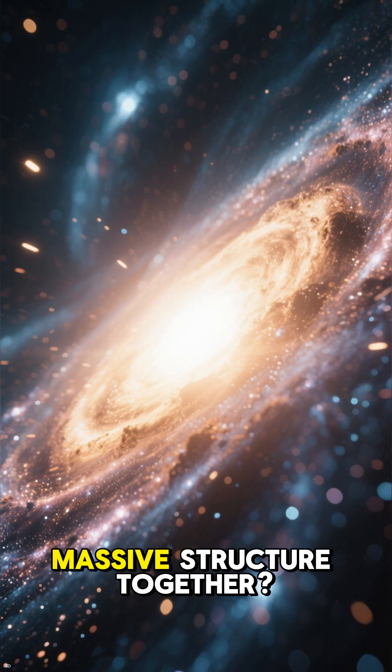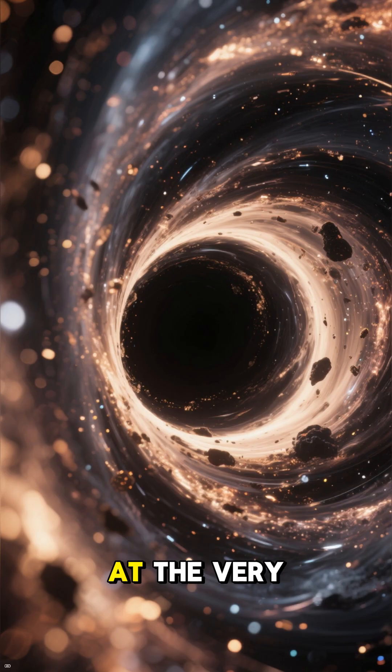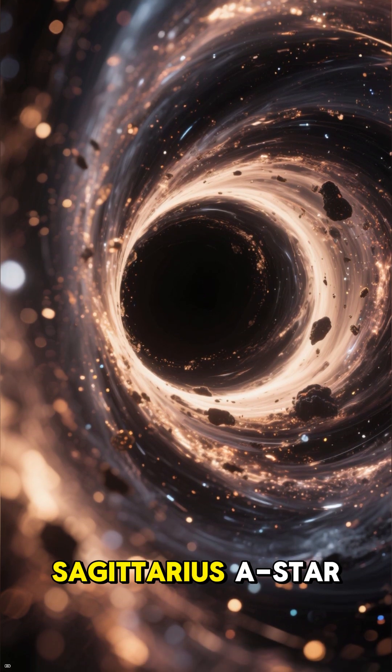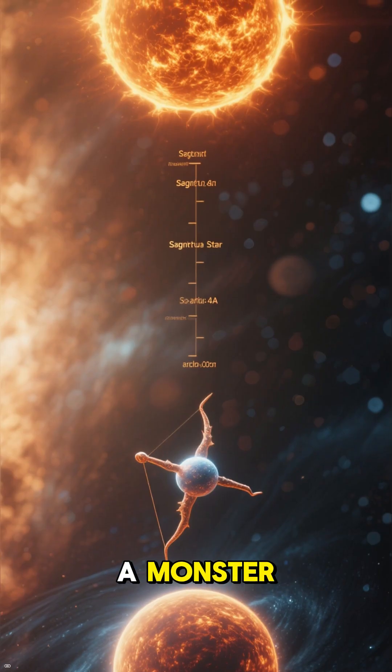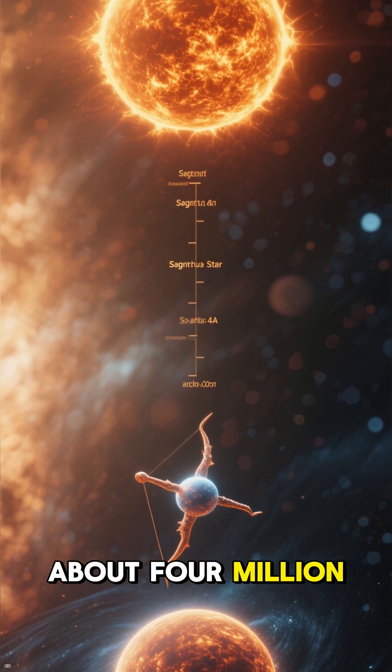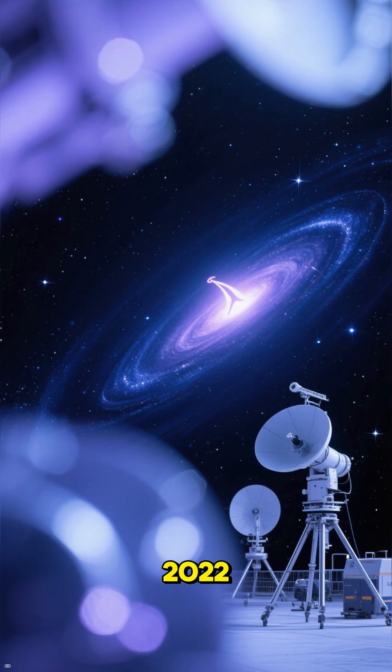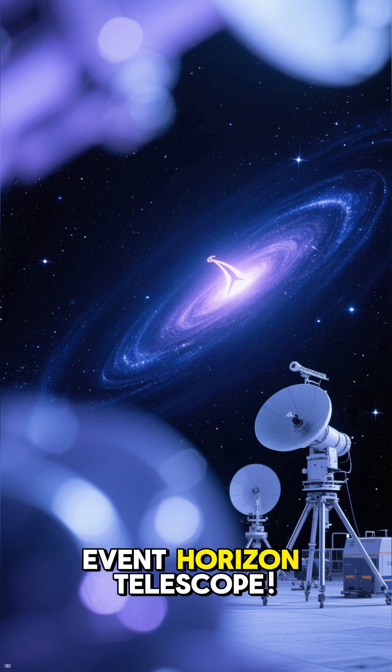And what's holding this whole massive structure together? At the very heart of our galaxy, there's a supermassive black hole named Sagittarius A-star. This thing is a monster, with a mass about 4 million times that of our own sun. We even got a picture of it back in 2022 thanks to the Event Horizon Telescope.